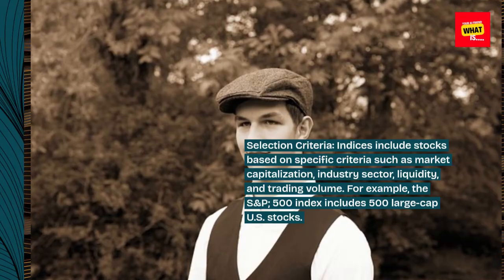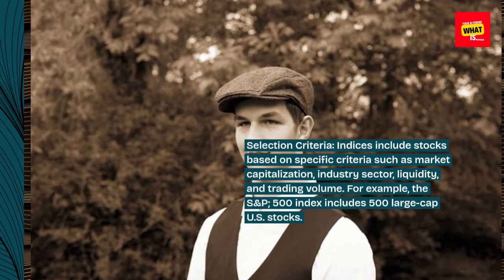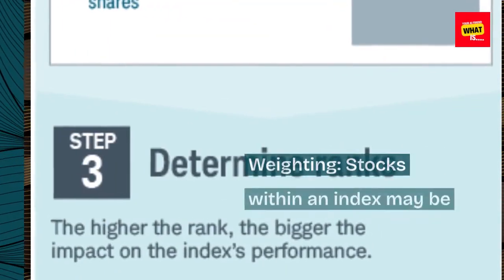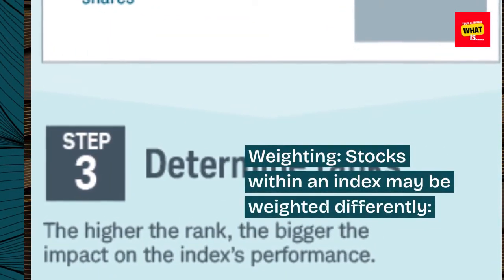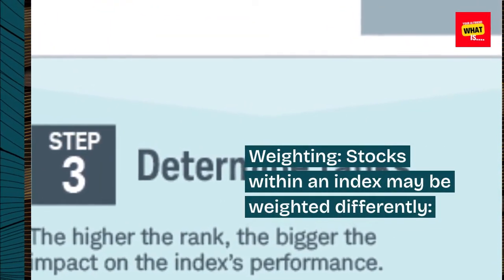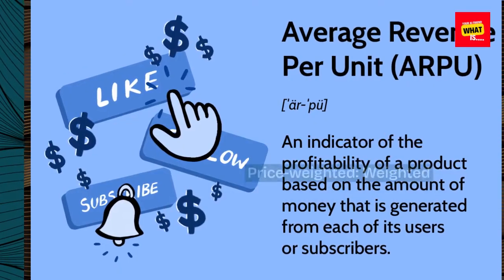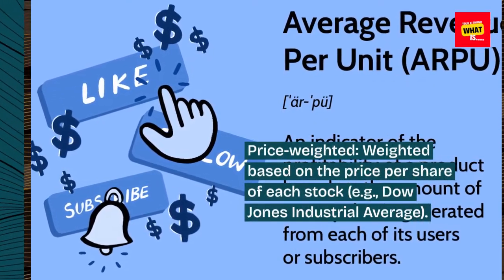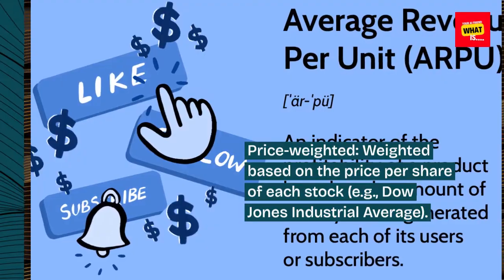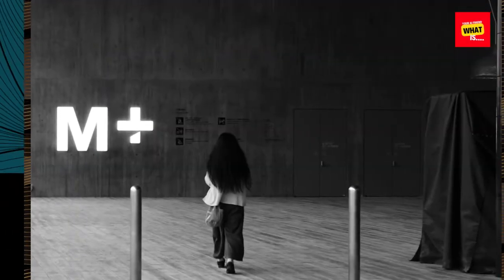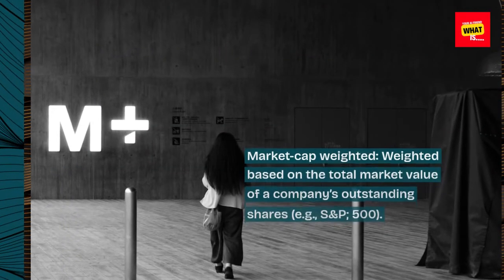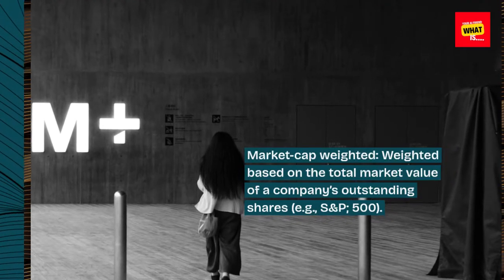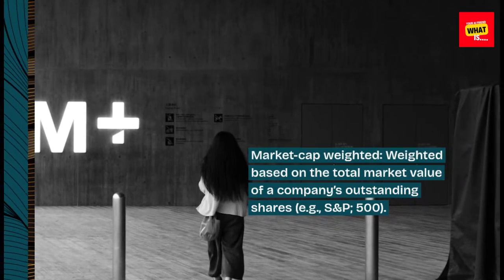For example, the S&P 500 index includes 500 large-cap U.S. stocks. Weighting: Stocks within an index may be weighted differently. Price-weighted: weighted based on the price per share of each stock, e.g., Dow Jones Industrial Average. Market cap-weighted: weighted based on the total market value of a company's outstanding shares, e.g., S&P 500.